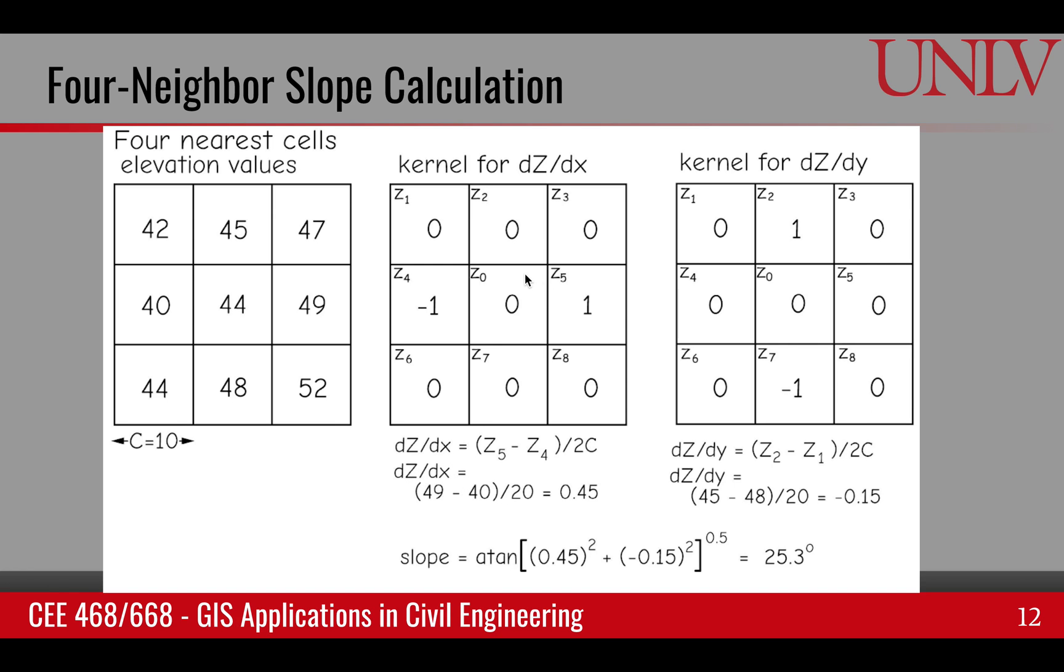Similarly, I can rotate it to create a dz/dy kernel. In this case, north location for north pixel is 1 and south pixel is minus 1. And when I apply this filter at a given location in my DEM, I will get z2 minus z7, or 1 times 45 plus minus 1 times 48. So that would give me the y-direction slope. And again, those two can be used to compute the slope.